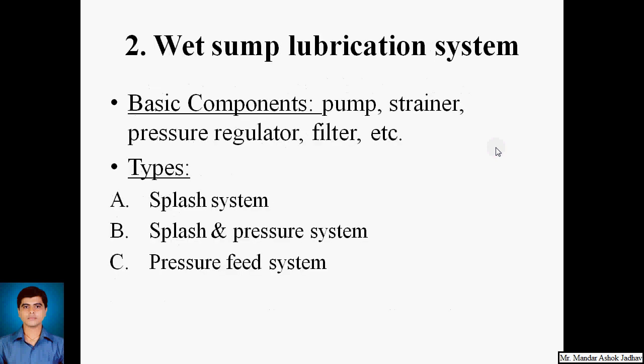The second lubrication system is the wet sump lubrication system. In this system, the bottom of the crankcase contains an oil pan or sump from which lubricating oil is pumped to various engine components by a pump. After lubricating these parts, the oil flows back to the sump by gravity and is recirculated. The basic components of this system are a pump, strainer, pressure regulator, filter, etc. There are different types of wet sump lubrication systems: splash system, splash and pressure system, and pressure feed system.